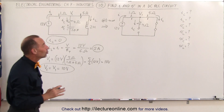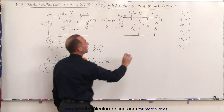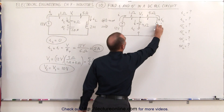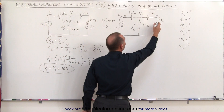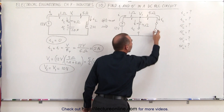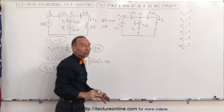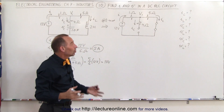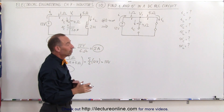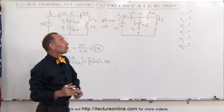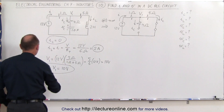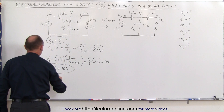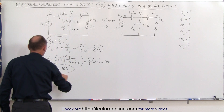Now we need the voltage across the inductor. At steady state, there is no voltage across the inductor because there is no opposition to current change, because there is no change in the current. Therefore, the voltage across the inductor equals 0 volts.